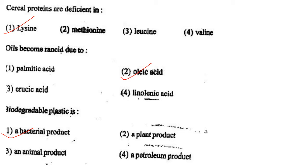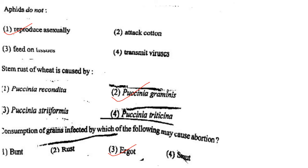Next one: [A product] is a bacterial product; option 2, a plant product; option 3, an animal product; option 4, a petroleum product. Answer is option 1: bacterial.